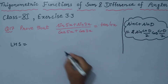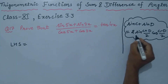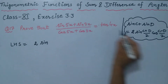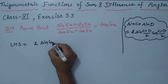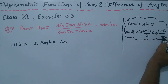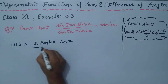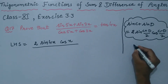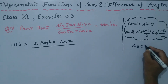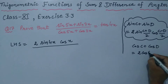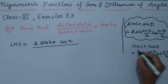Applying this CD formula to the numerator: 2 sin (5+3)/2 = 4x, into cos (5-3)/2 = x. For the denominator, cos 5x plus cos 3x — the rule is cos C plus cos D equals 2 cos (C+D)/2 into cos (C-D)/2.